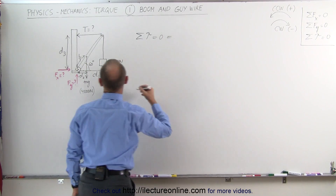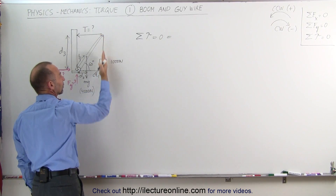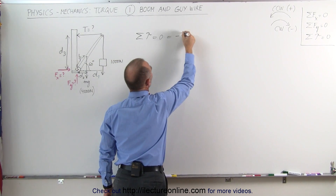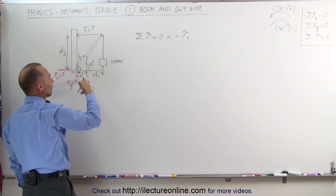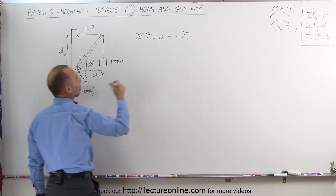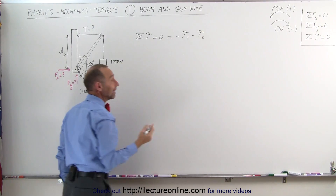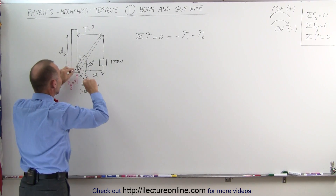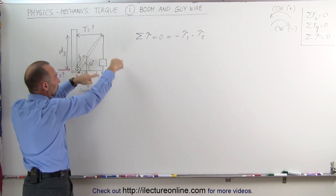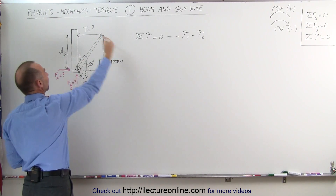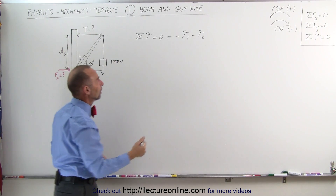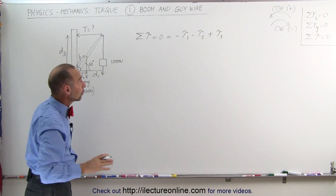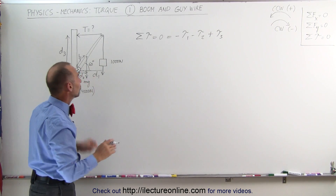Torque 1 is caused by the hanging weight — that's in the clockwise direction, so it's negative: minus torque 1. Torque 2 is caused by the weight of the boom, also clockwise, so minus torque 2. Both of these forces would cause the boom to rotate clockwise if it were free to move. Finally, the tension acts in the opposite direction, so we have plus the torque caused by the tension at the top. Now we'll write in the forces and the distances.